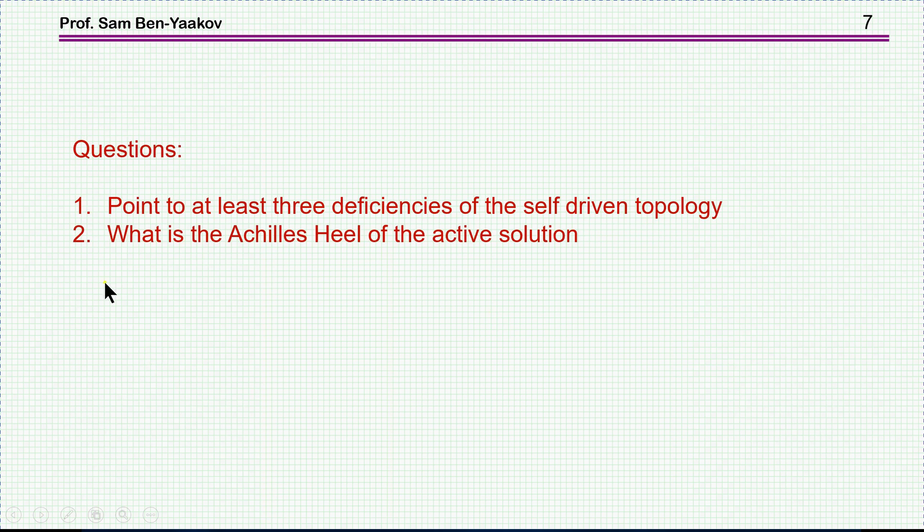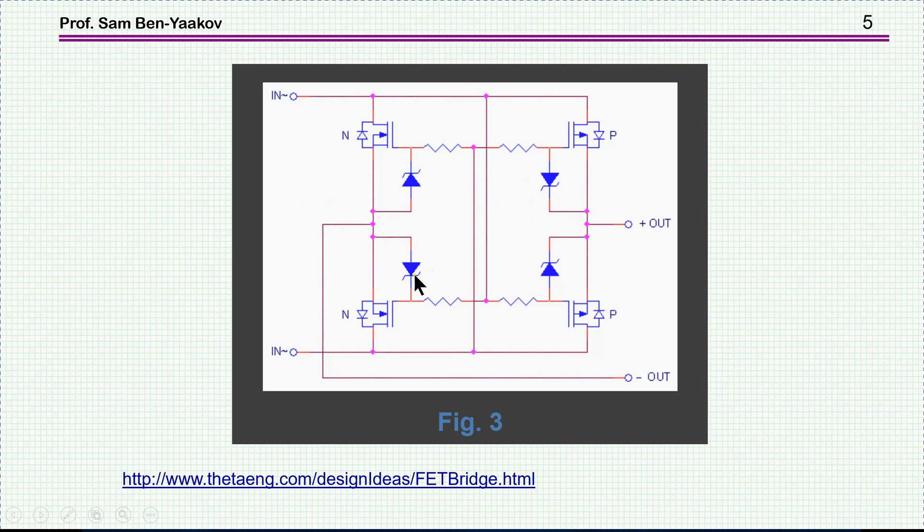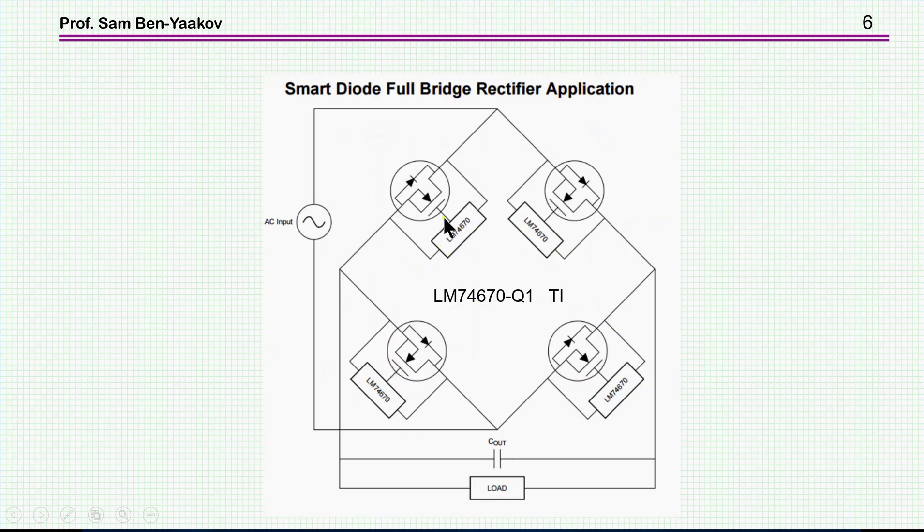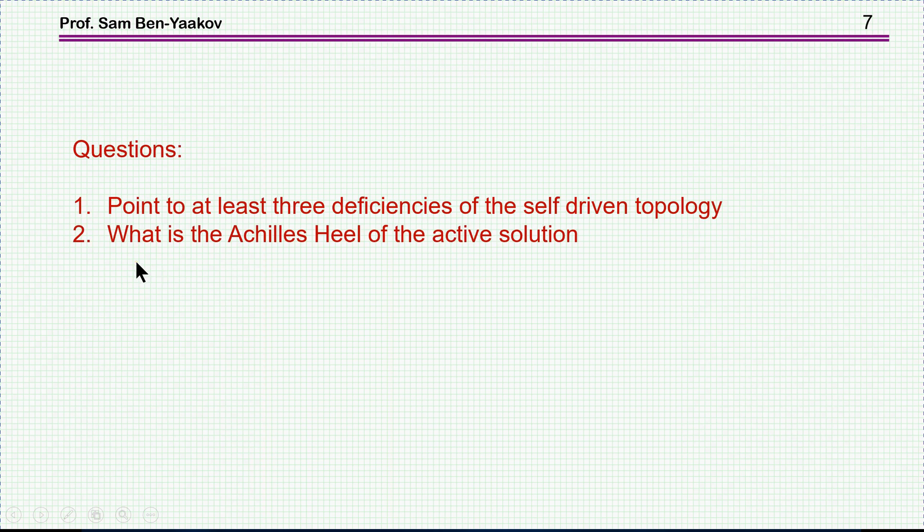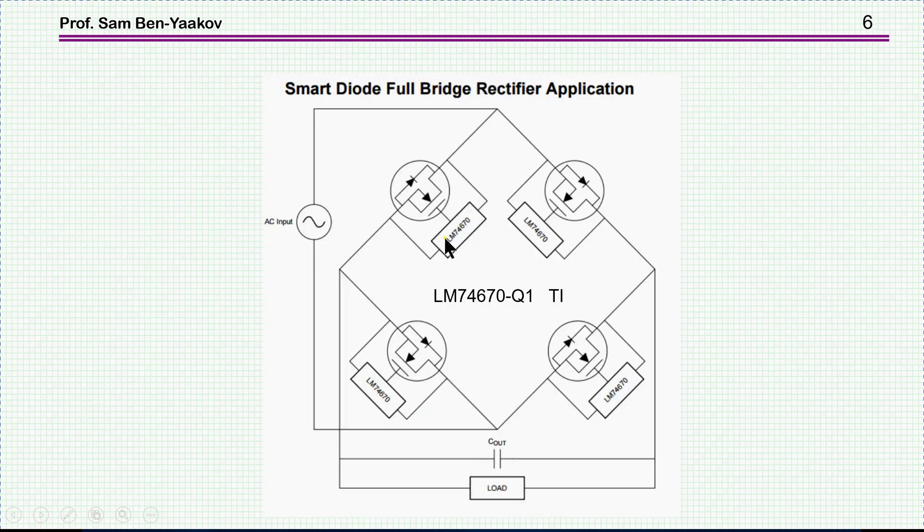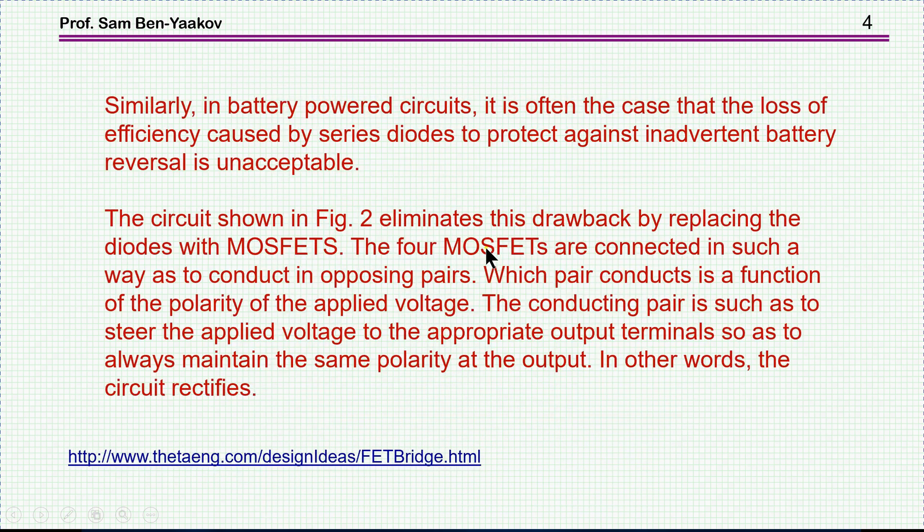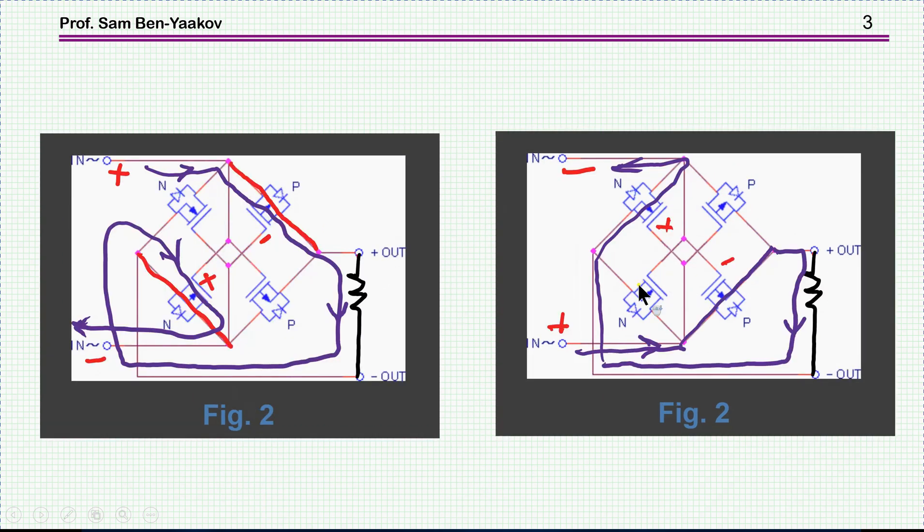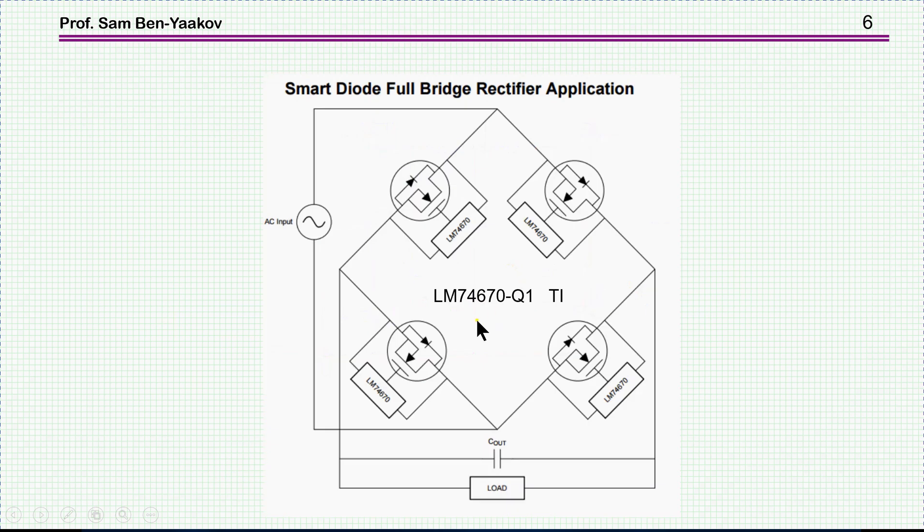So these are the circuitry of the ideal diode bridge. Here are the questions that I am posing: to point to at least three deficiencies of the self-driven topology, that is the topology which has only passive elements in that there's no electronics. I mean there are some elements like zener diodes but no active electronics as we have it here. And the second question is what is the Achilles heel of the active solution, by active I mean this unit here with the electronics in it. So the questions are to point to at least three deficiencies of this solution and what is the problem, the major problem here that one has to take care of and worry about.